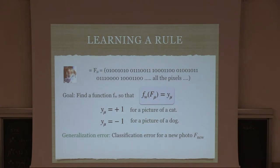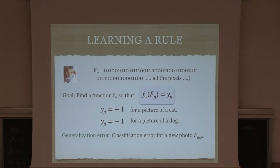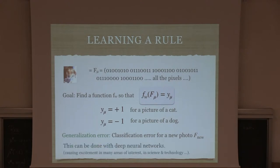It doesn't seem like a very simple problem — how should we come up with this function f_w, where should we even start? The notion of how well we're doing is the generalization error: if I give you a set of pictures not in the training set, the classification should be correct on that new unseen set. Only about 15 years ago we had basically no good system for this, but today with deep neural networks we can solve problems like that very routinely with very good performance.